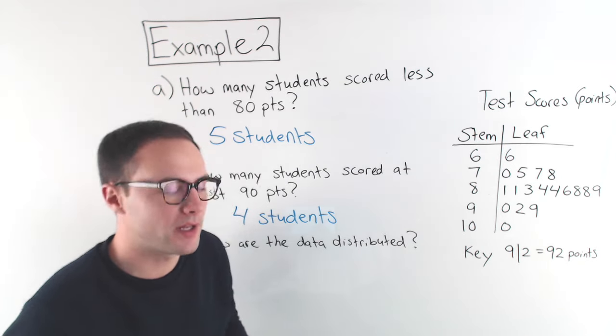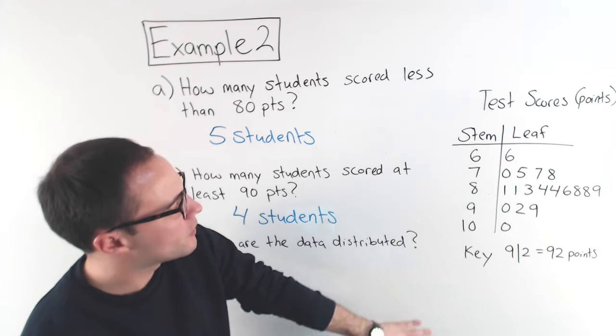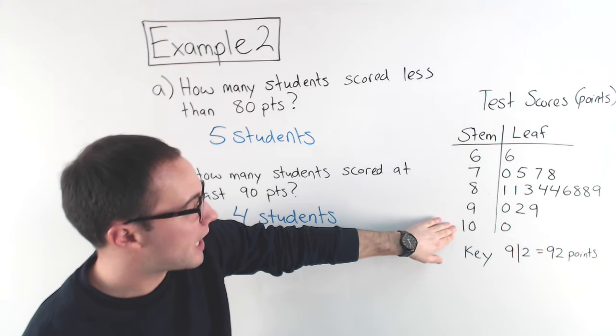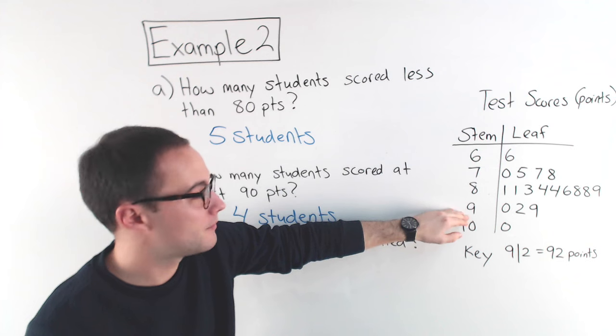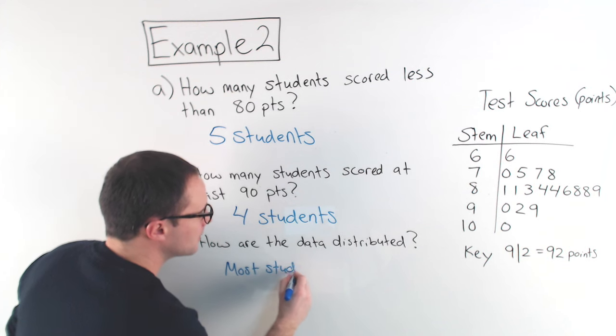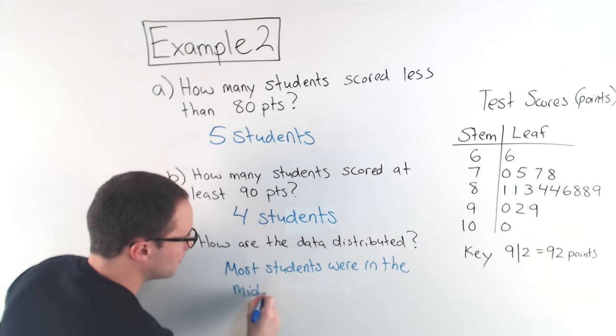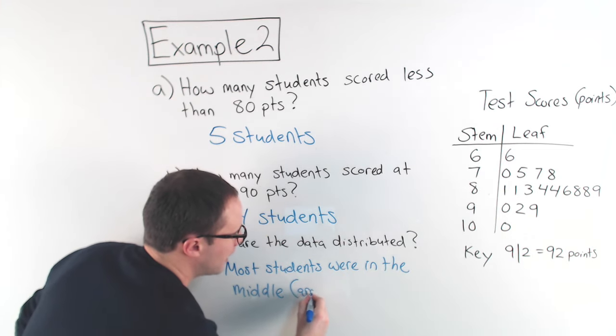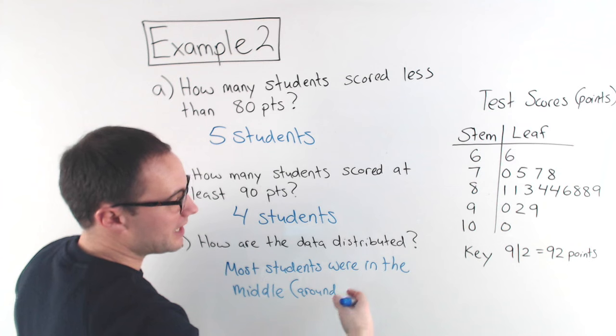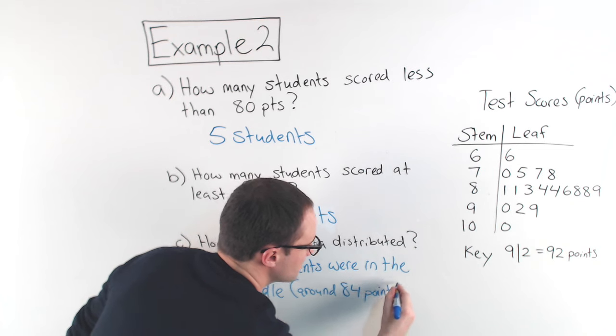And the last one. How are the data distributed? So, that just means what's kind of the shape or how is it spread out? If you notice, we have kind of one student who was pretty low, one student who was really high, and everybody else is kind of in the middle. Right? So, let's say that. Most students were in the middle, and we can say around 80, probably the exact middle, maybe around 84 points.